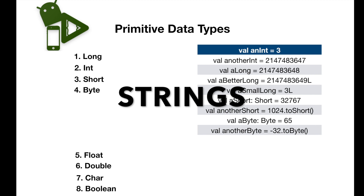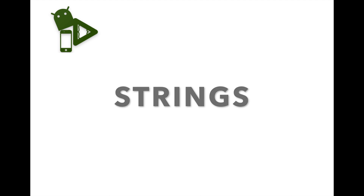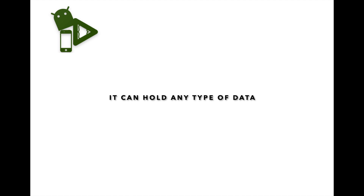String is a class and it handles a bunch of functions. Primitive data types are limited — like fixed size. String can hold any type of data. The String is a non-primitive data type.